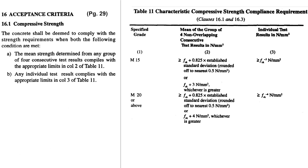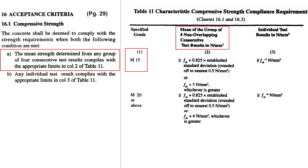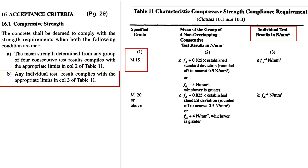As per IS 16.1, the concrete shall be deemed to comply with the strength requirement when both the following conditions are met. The first condition is the mean strength determined from any group of four consecutive test results complies with the appropriate limit in column 2 of Table 11, which states that for M15 grade of concrete, the mean of the group of four consecutive test results should be greater than or equal to characteristic strength plus 0.825 times the established standard deviation, rounded off to nearest 0.5 N/mm², or characteristic strength plus 3 N/mm², whichever is greater. The second condition states that any individual test result should be greater than or equal to characteristic strength minus 3 N/mm².